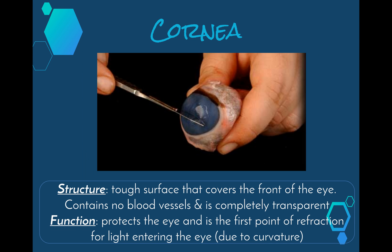The cornea is the tough surface that covers the very front of our eye. It contains no blood vessels and is completely transparent, so that light is able to enter our eye. Its main function is to protect the eye, and it is the first point of refraction for light entering the eye due to its curvature. Refraction is the bending of light, and we'll be looking at refraction in a lot more detail — for now we just need to know that the cornea is the first point of refraction in the eyeball.